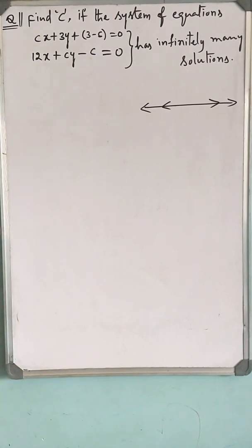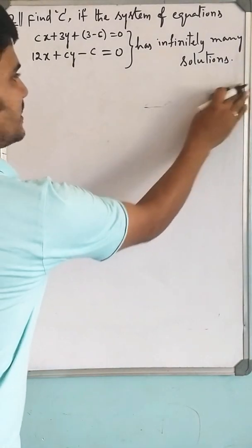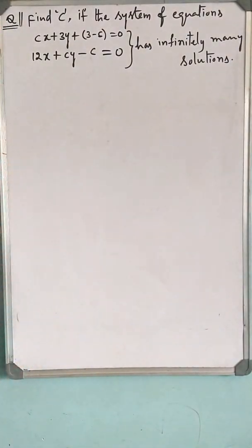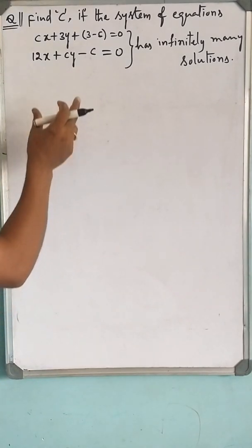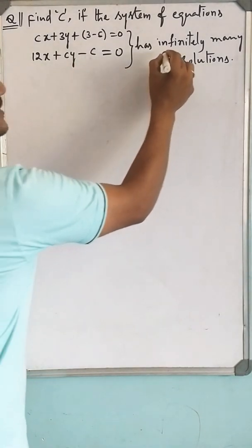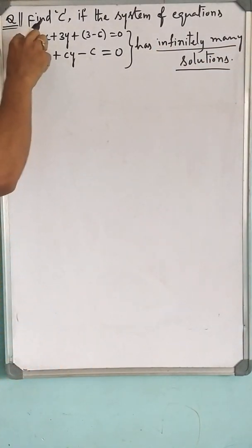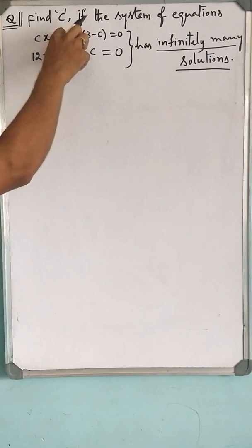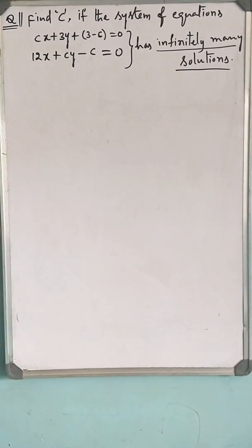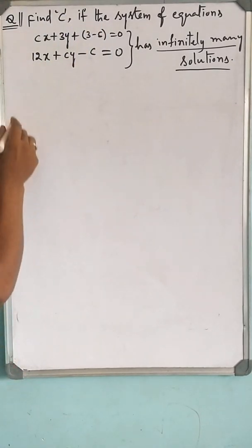What is the condition to be satisfied to represent a system of equations having infinitely many solutions? As you know, the relation between the ratio of x coefficients and y coefficients and constants should be same. That is, they must be equal to each other.